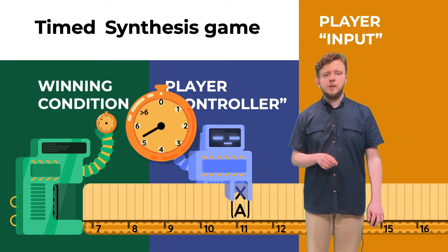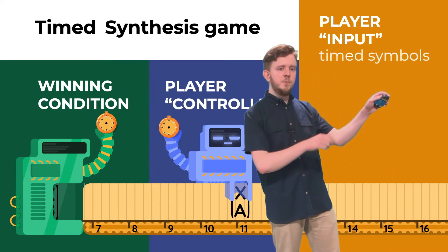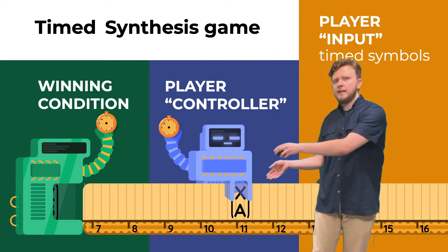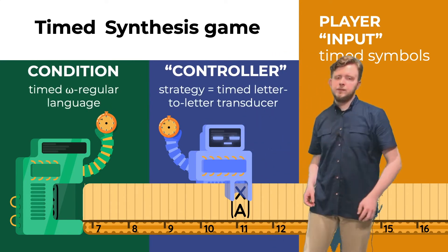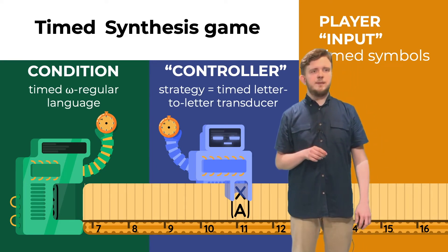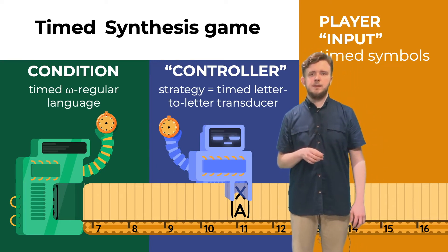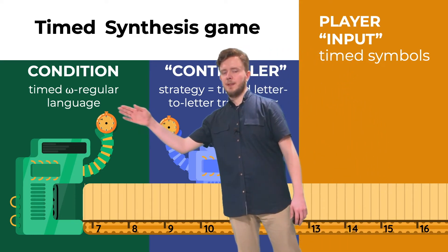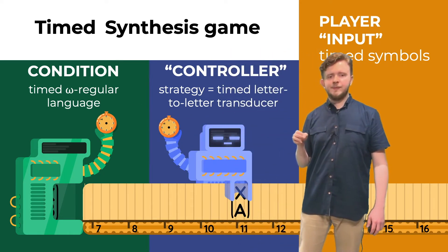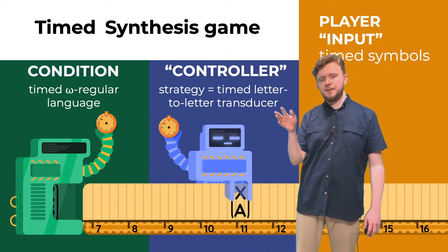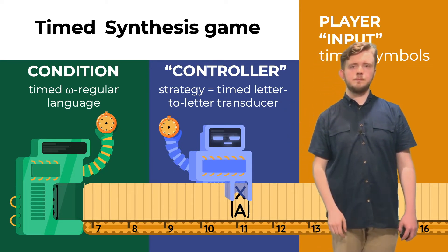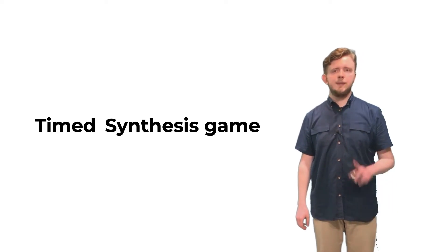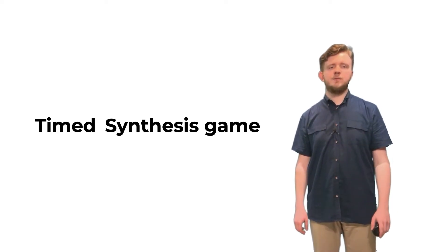So, to sum up, we have a player input that now plays timed symbols. Both of these machines are given clocks, and to use them, they may use timed transitions that speak about the values of the clocks. So, effectively, what we get here is a timed omega regular language here, and a timed letter-to-letter transducer as a strategy of the controller. So, this is how our timed synthesis games are designed. But before I can tell you exactly what we proved about them, I need to be a bit more formal.